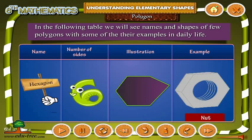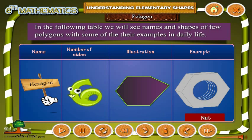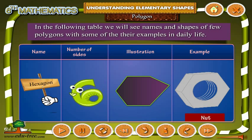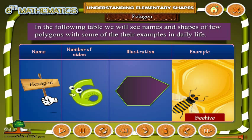Hexagon — number of sides is 6. Illustration, for example: Nut, Beehive.